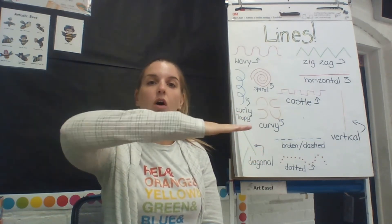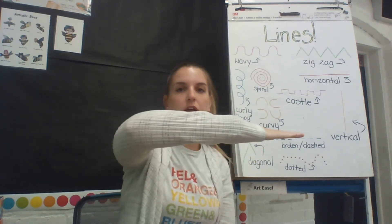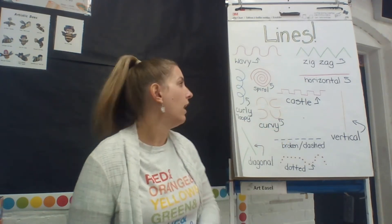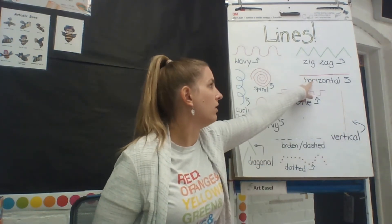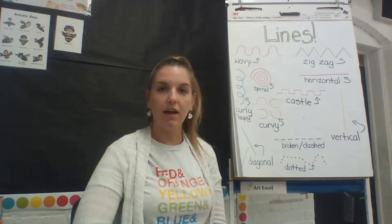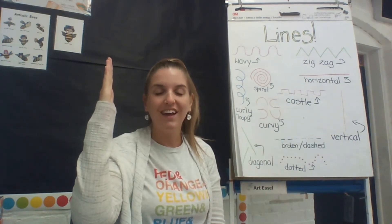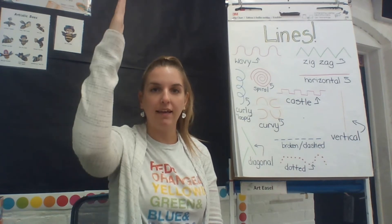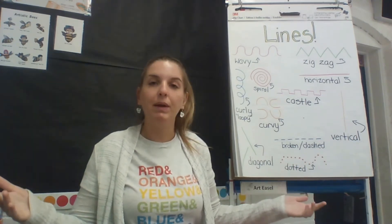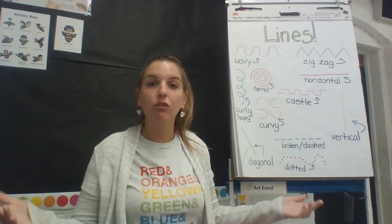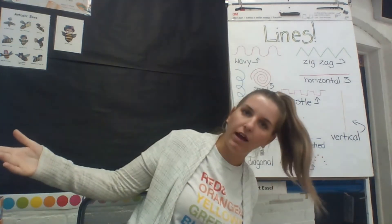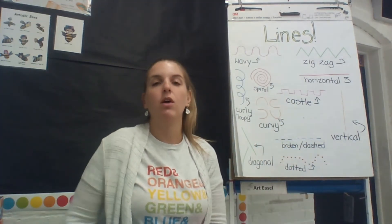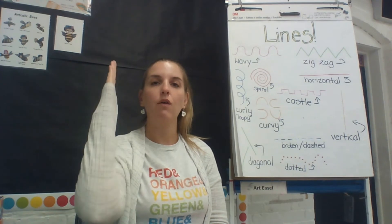So this is a horizontal line — it goes from side to side. The other line you have is if you take a horizontal line and flip it the other way, you have a vertical line. A vertical line goes up and down. When we stand up, we are standing vertically. We're not tilted sideways and we're not laying on the floor — we're standing straight up and down. We are vertical.